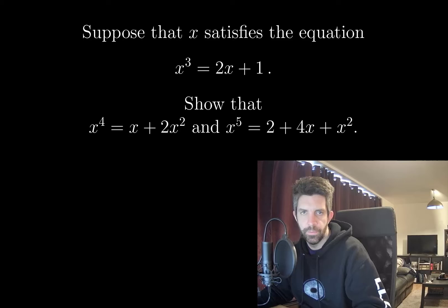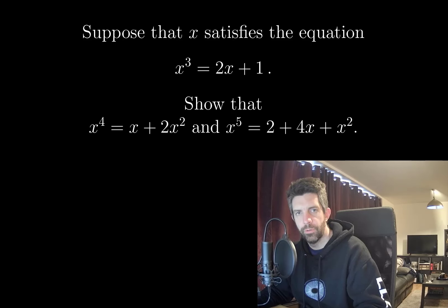Suppose that x satisfies the equation x cubed equals 2x plus 1. Show that x to the 4 is equal to x plus 2x squared and x to the 5 is equal to 2 plus 4x plus x squared.